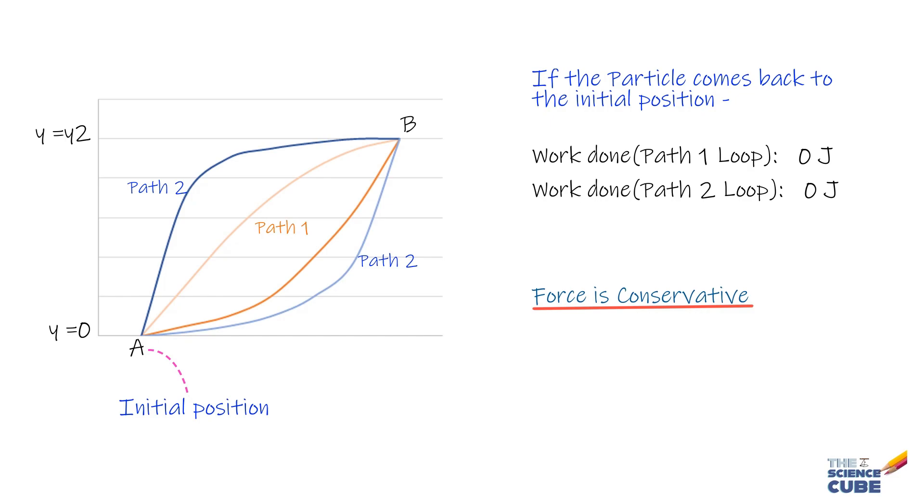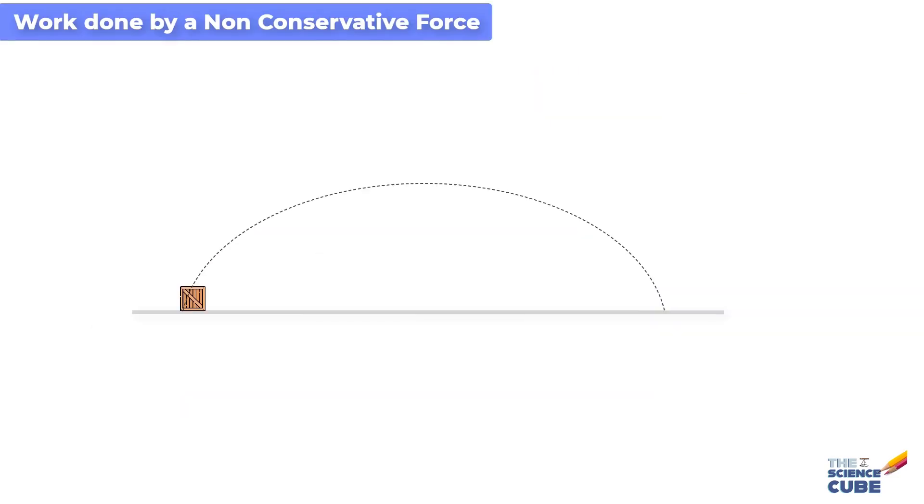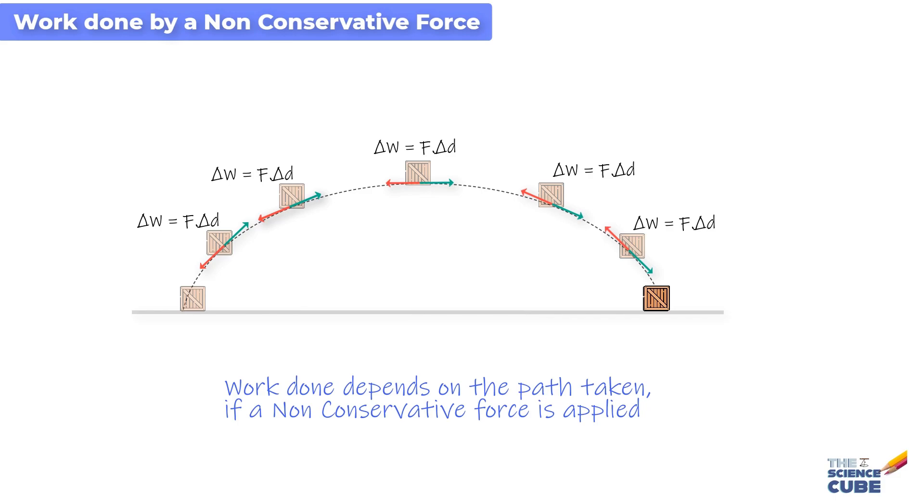Now, let us apply this logic to a non-conservative force and say you drag a block on two different paths like this and the force you apply is just enough to overcome the kinetic force of friction. Now, since the force of friction is always opposite the direction of motion, if the applied force has to overcome this force, it always needs to be in the direction of motion at all times. And therefore, longer the path, more the work done by the applied force because at every displacement delta D, the work done is force into displacement. So, more the displacement, more the total work done. So, here we can say that work done does depend on the path taken. That is, when a non-conservative force is involved.